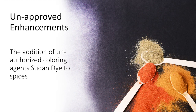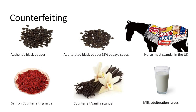Counterfeiting is the copying of brand name, packaging, concept, recipe, or processing method of food products for economic gain. You can see different products such as authentic black pepper versus black pepper adulterated with papaya seed. Similarly, saffron counterfeiting, the vanilla scandal, the horse meat scandal, and adulteration in milk are all examples of counterfeiting.